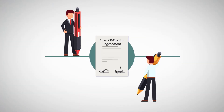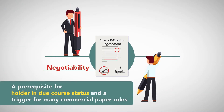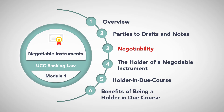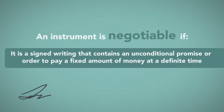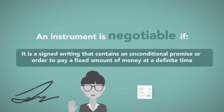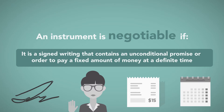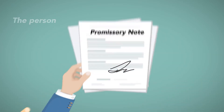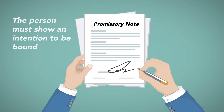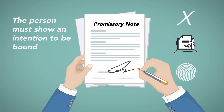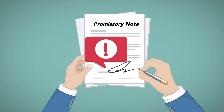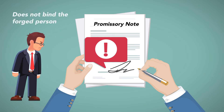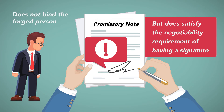A holder in due course receives an instrument in a commercial transaction and satisfies additional criteria that we'll discuss a bit later. We'll start with the note's negotiability, which is a prerequisite for holder in due course status and a trigger for many commercial paper rules. An instrument is negotiable if it is a signed writing that contains an unconditional promise or order to pay a fixed amount of money at a definite time. The signature requirement dictates that the person must show an intention to be bound. This can be conveyed by a written signature, an X, a computer graphic, or even a thumbprint. Interestingly, a person who forges another person's signature does not bind the forged person, but does satisfy the negotiability requirement of having a signature.